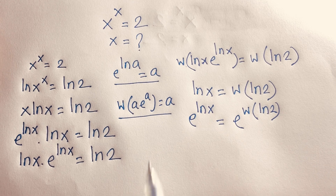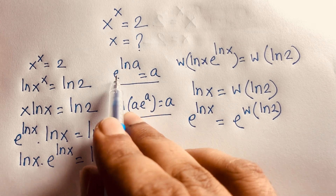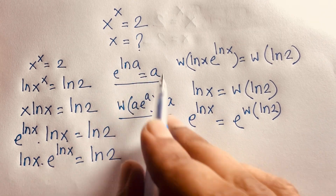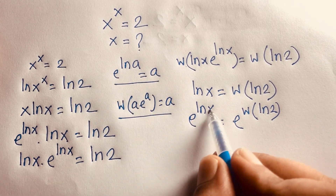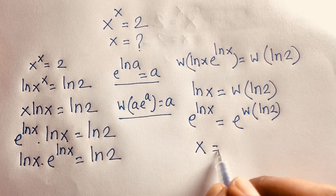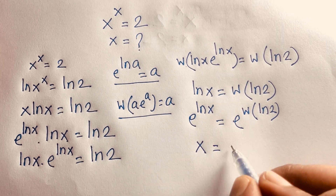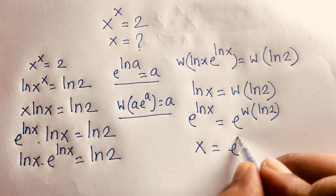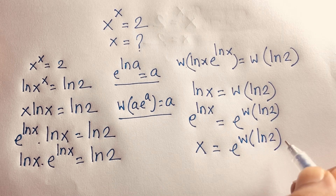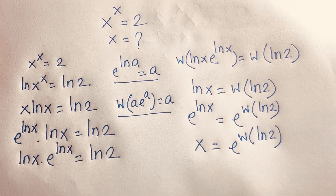Since e to the power ln(a) equals a, we have e to the power ln(x) equals x. Therefore, x equals e to the power W(ln 2).